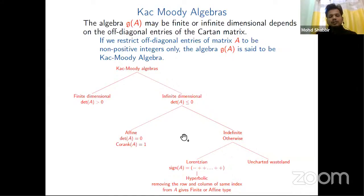When the matrix A is non-singular, we always get finite dimension; otherwise, there's an infinite dimension algebra. If the eigenvalue is zero, we get affine. There's a special case: if the signature of the matrix is the Lorentzian type, we also may get the hyperbolic algebra. If removing any one row or column results in finite or affine, we get hyperbolic.